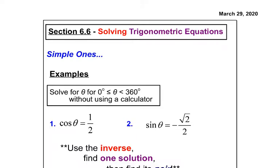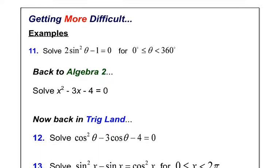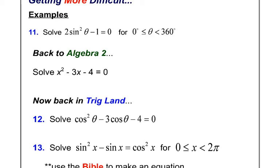All right, pre-calc friends, we're at the absolute end. This is the end of 6.6, the last two problems. So again, to summarize, we just did number 11, which just had to isolate the trig, get by itself.